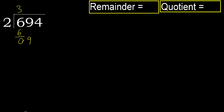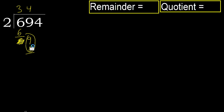Next, bring down 9. 2 multiplied by 5 is 10, is greater. Multiply by 4 is 8, is not greater. Subtract.